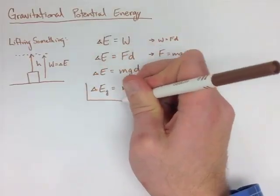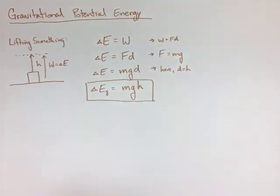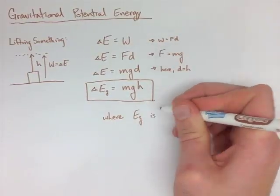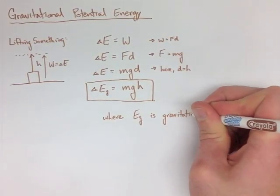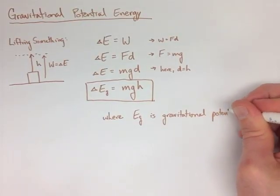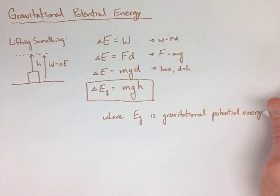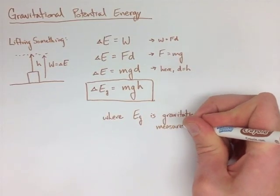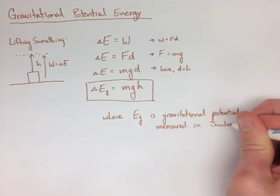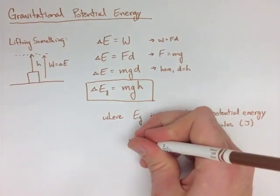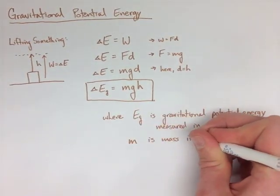So the gravitational potential energy is mgh. Where energy is gravitational potential, mass is measured in kilograms, g is our gravitational constant of 9.8, and h is the height measured in meters.